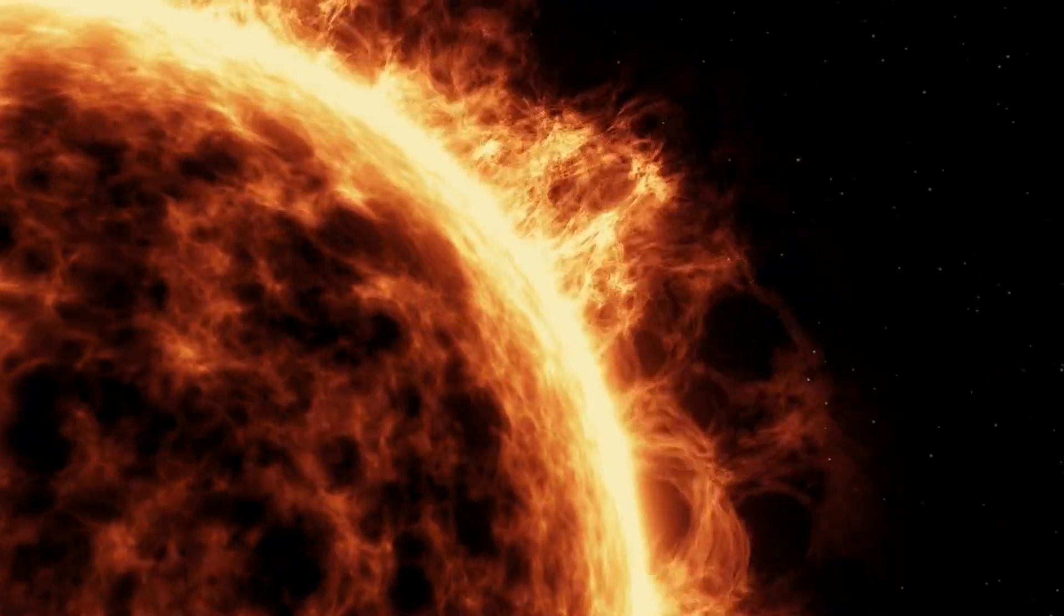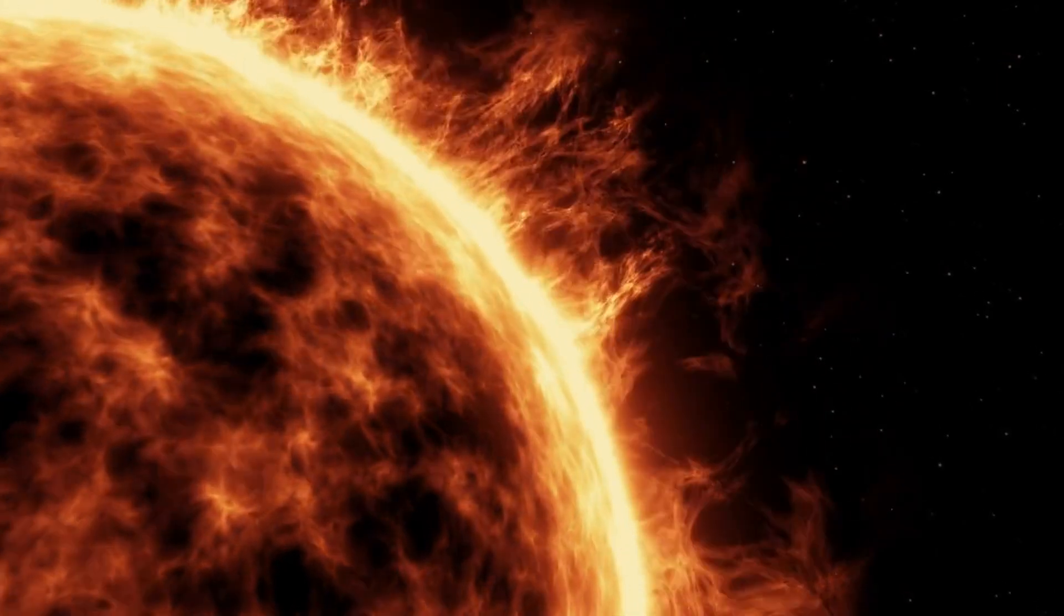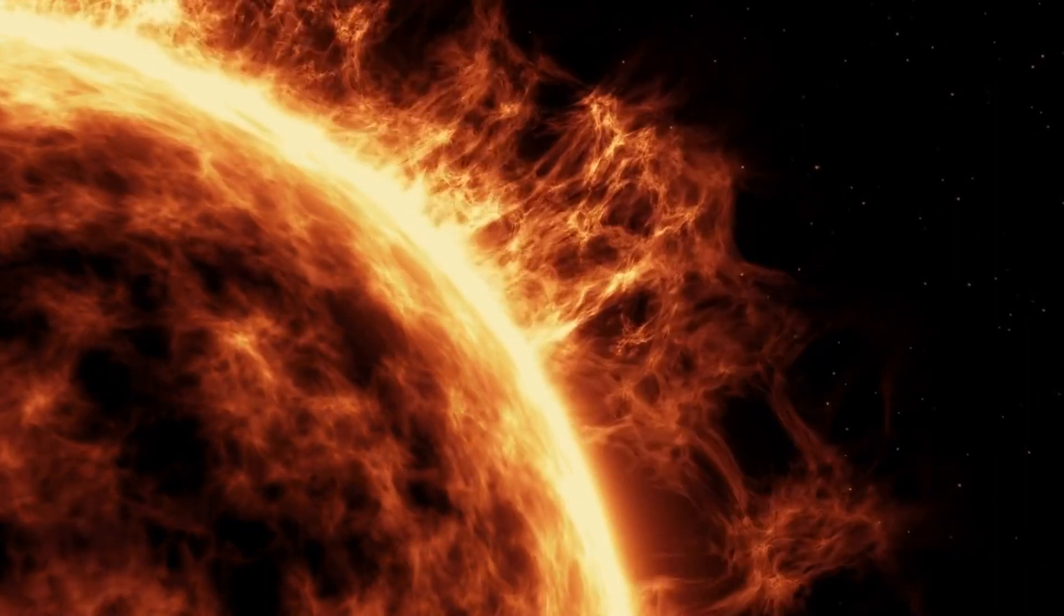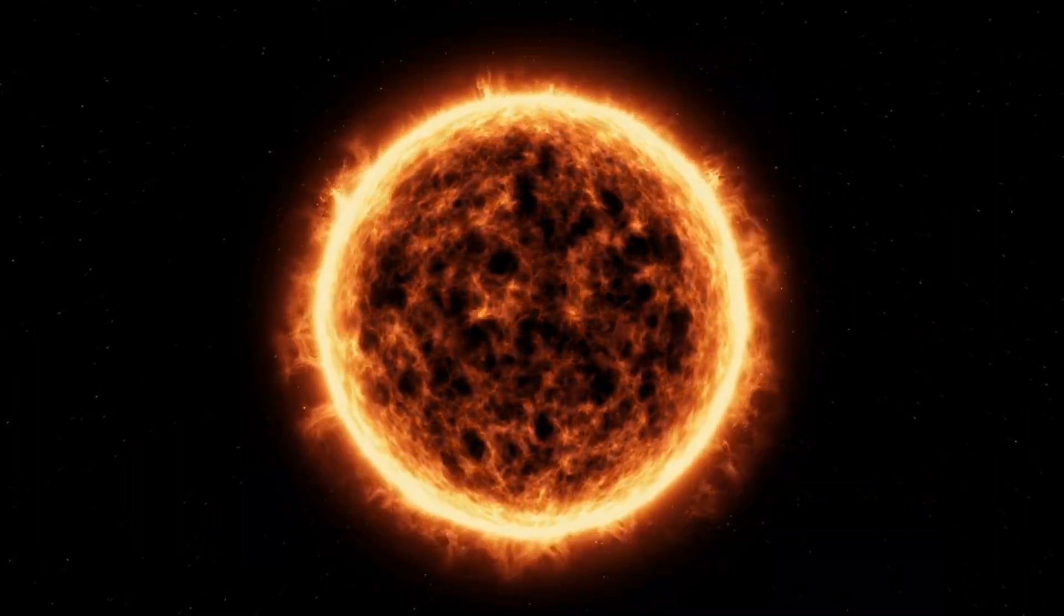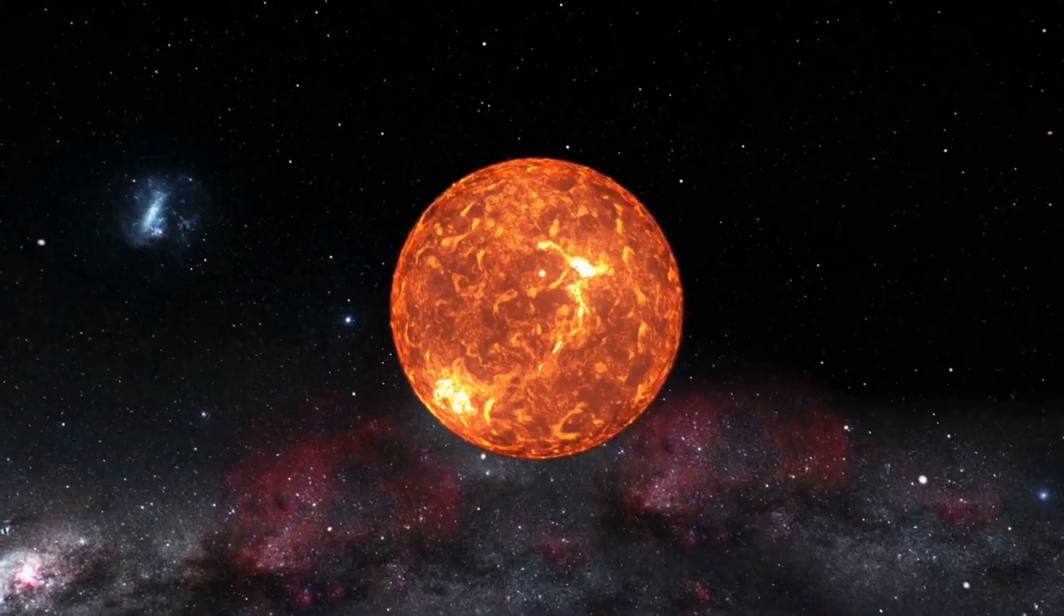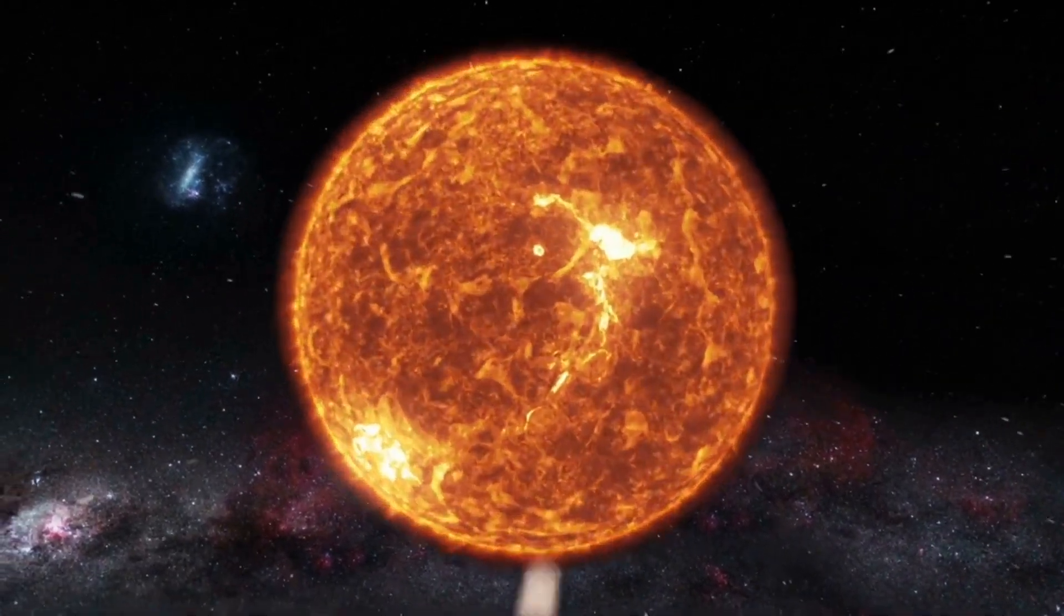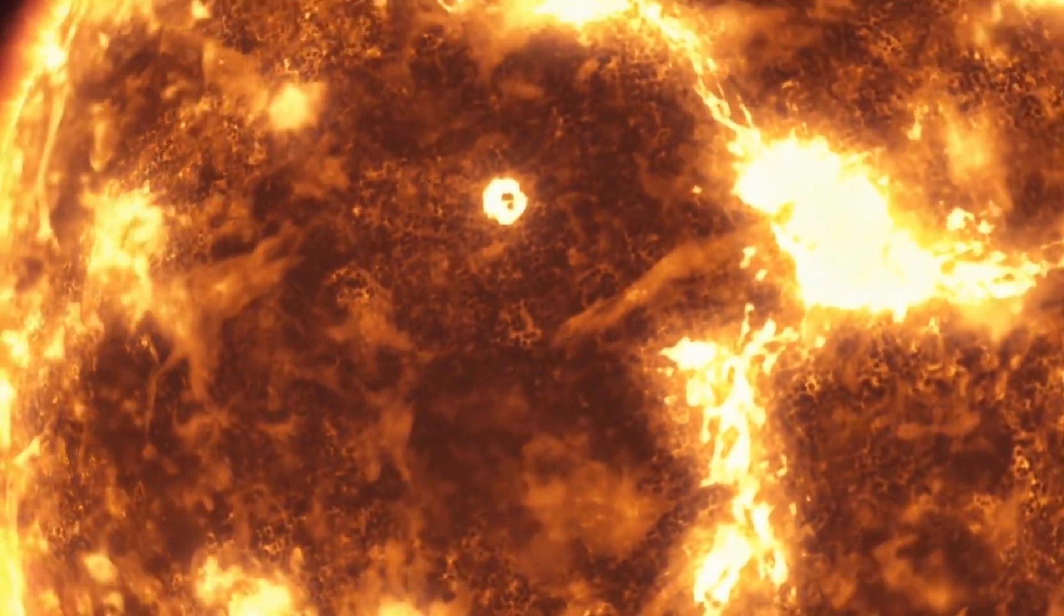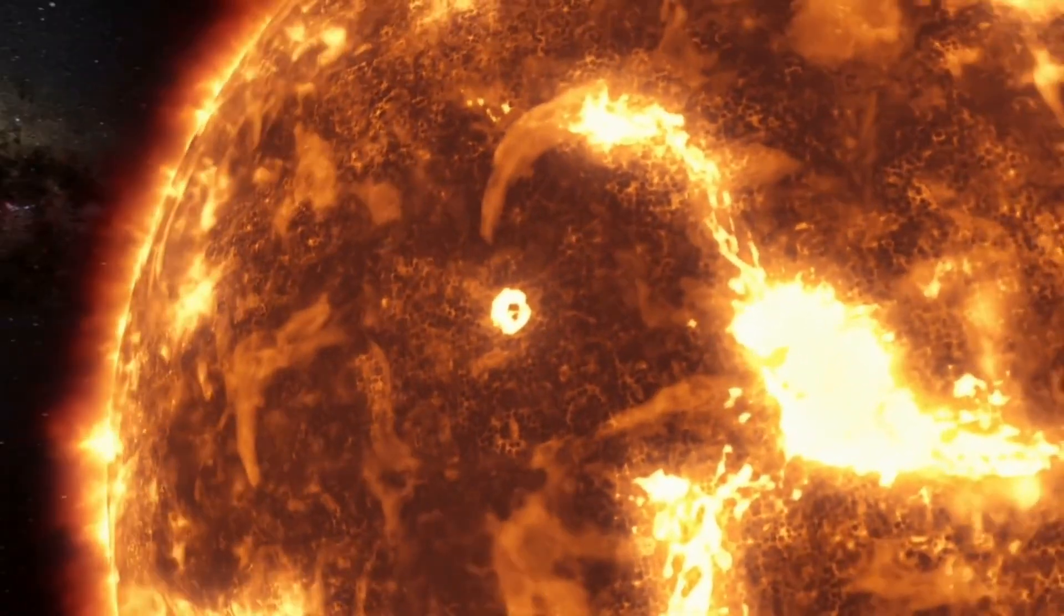The speed, density, and magnetic properties of the solar wind can vary greatly depending on the activity on the Sun's surface. When the Sun is relatively calm, the solar wind is relatively constant and mild. However, when the Sun is more active, such as during solar flares or coronal mass ejections, the solar wind can become highly variable and intense.